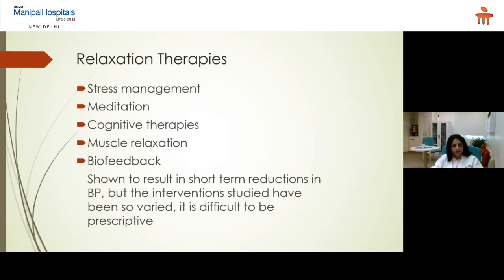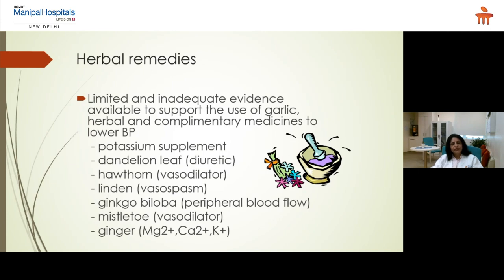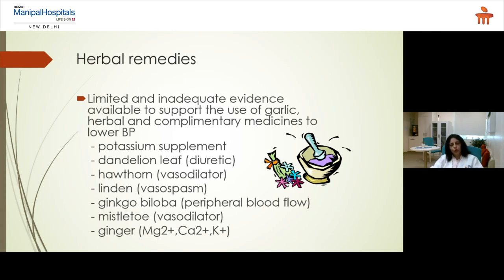Yoga and meditation are important things which can help you in reducing stress and controlling this condition. Herbal remedies are a very common query, especially from older patients. We agree that there are very good natural products which provide antioxidant effects and, if consumed properly over a long time, can help in reducing the development of lifestyle diseases like hypertension and diabetes. But this has to be combined with other good habits — it's not that eating a diet heavy in oils and ghee can be countered by having some ginger or a natural product.